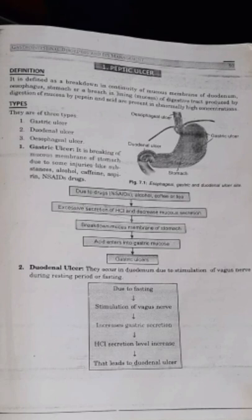Gastric ulcer is the breaking of the mucous membrane of the stomach due to some injurious substances like alcohol, caffeine, aspirin, and non-steroidal anti-inflammatory drugs. These substances cause increasing breakdown of the mucous membrane of the stomach.